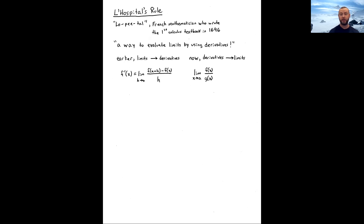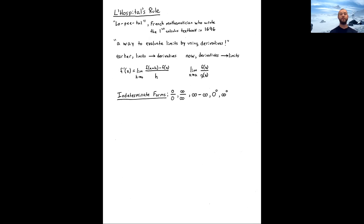Using derivatives via L'Hôpital's Rule gives us a way to evaluate these limits. There are a few indeterminate forms we've been encountering: 0/0 and ∞/∞, but also others like ∞ − ∞, 0^0, and ∞^0. These are all indeterminate forms in calculus, and they play a role in what we see now with L'Hôpital's Rule.